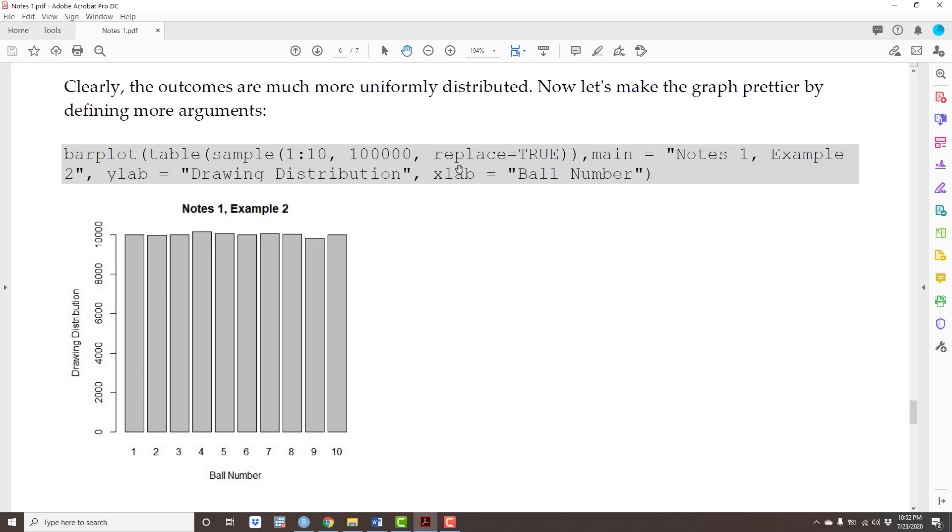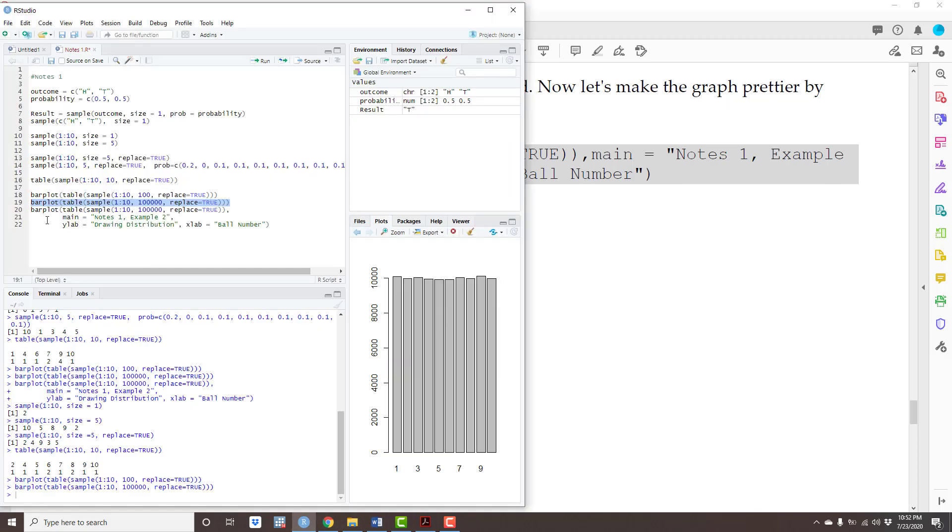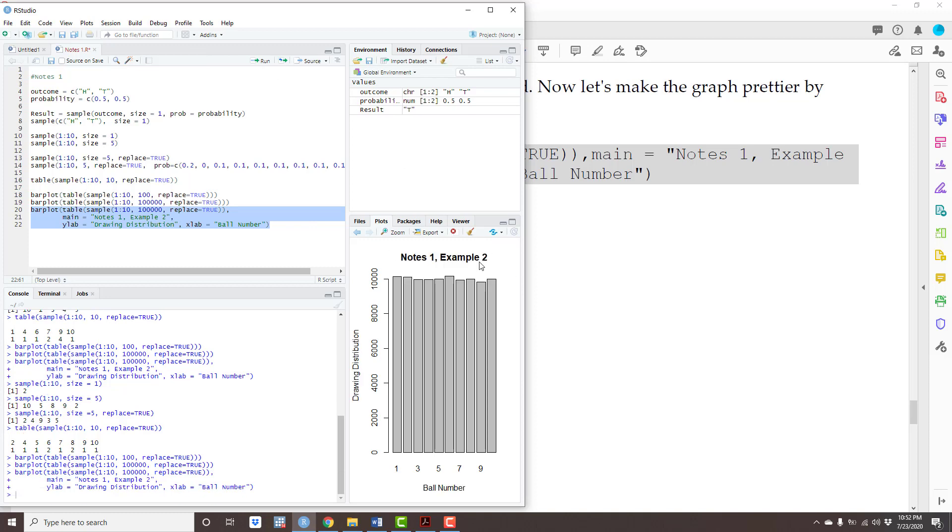The argument XLab tells R what is the label of the horizontal variable. In this case, ball number. So, let's go ahead. And now it looks much neater.